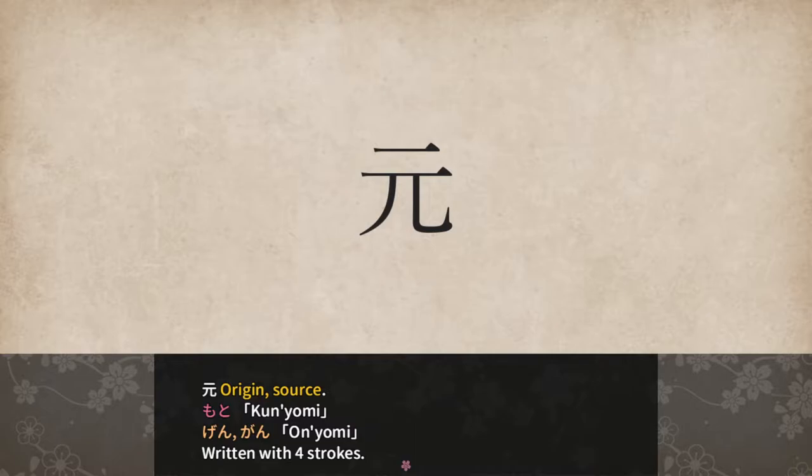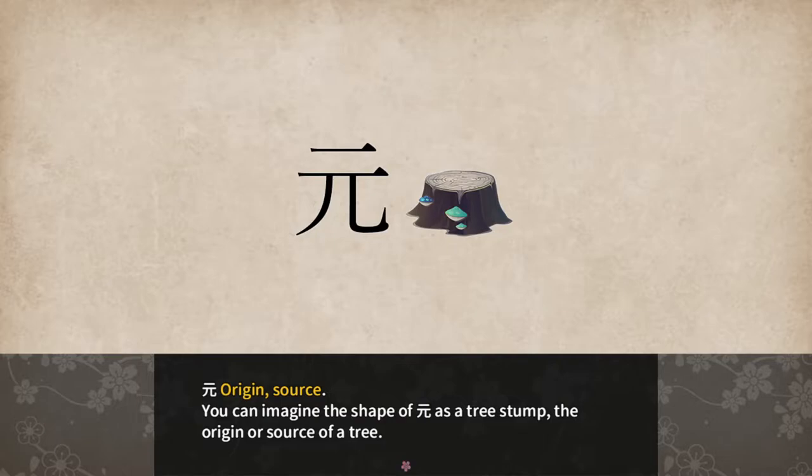You can imagine the shape of moto as a tree stump, the origin or source of a tree.